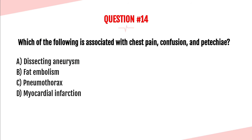Question number fourteen. Which of the following is associated with chest pain, confusion, and petechiae? A dissecting aneurysm, a fat embolism, a pneumothorax, or a myocardial infarction? The answer is B, a fat embolism. All of these symptoms are suggestive of a fat embolism, especially within the first 48 to 72 hours after a long bone fracture. None of the other answer choices would cause petechiae — the petechiae should be the indicator that this is a fat embolism.